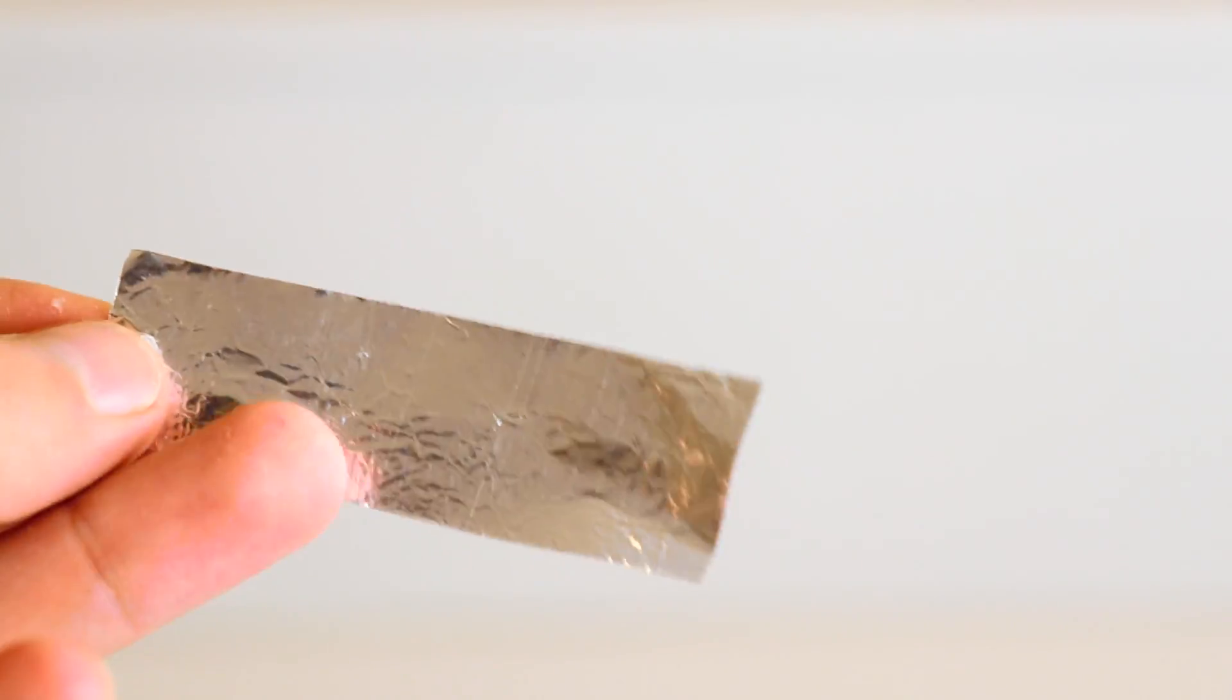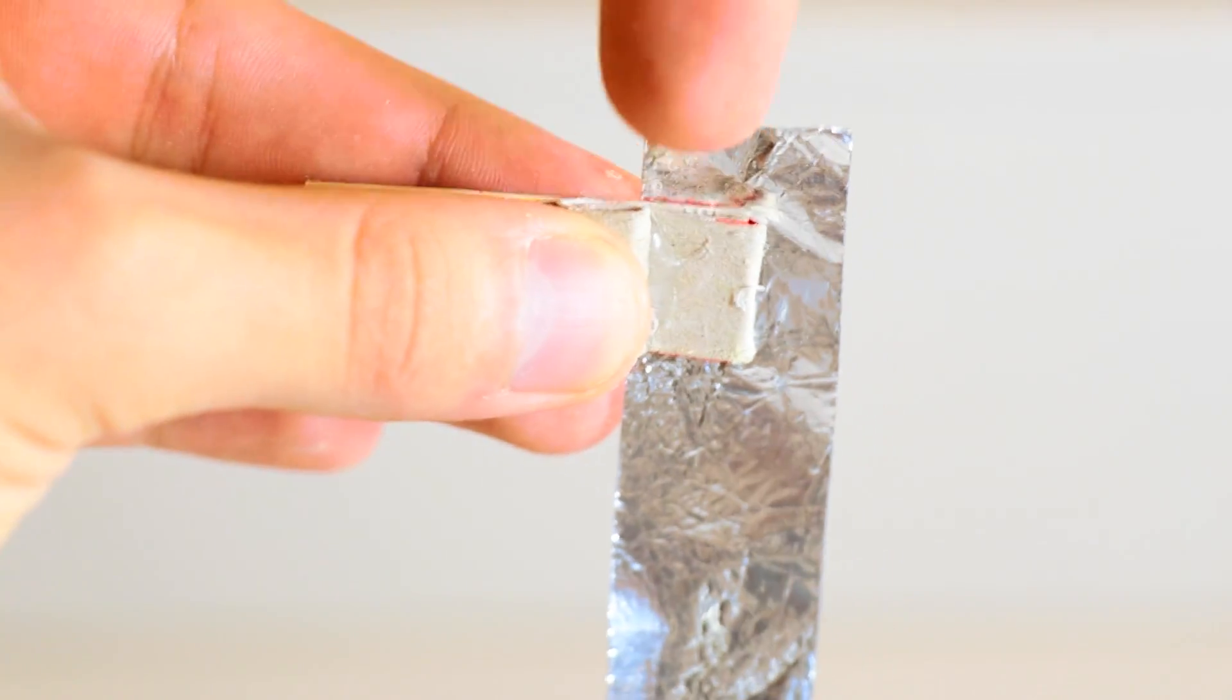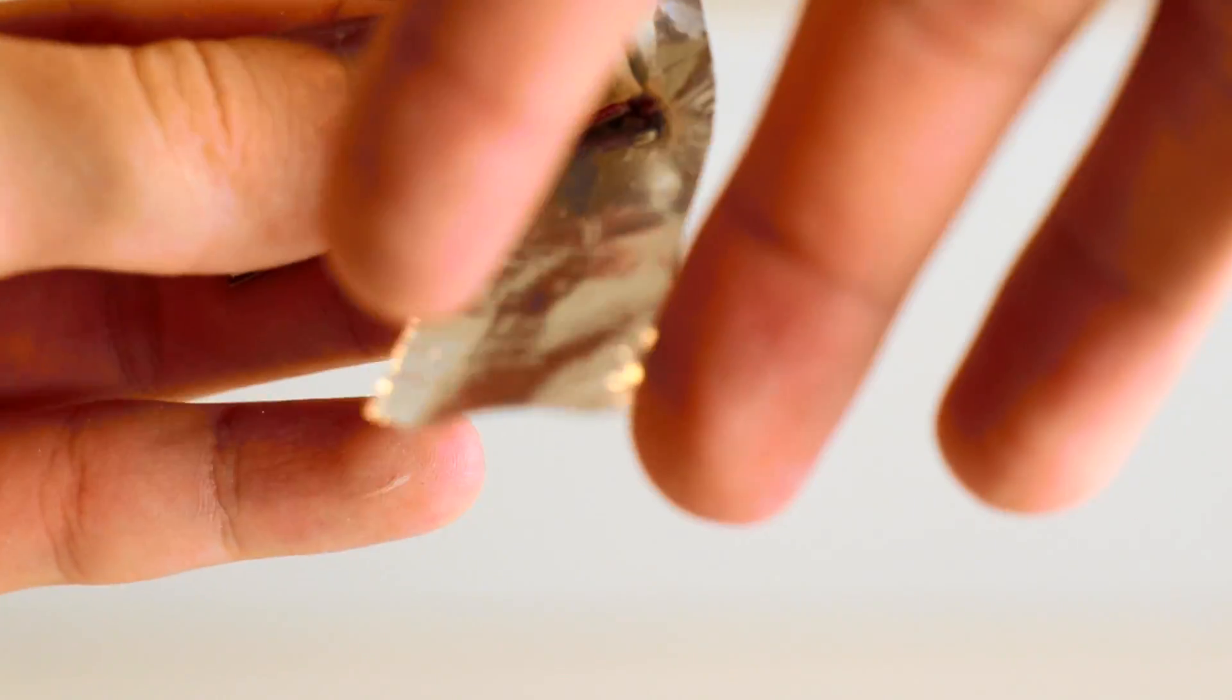And secure it with a dab of hot glue or some tape. Next take a small piece of aluminum foil and wrap it around the cardboard end. Like so. Then fold it back.